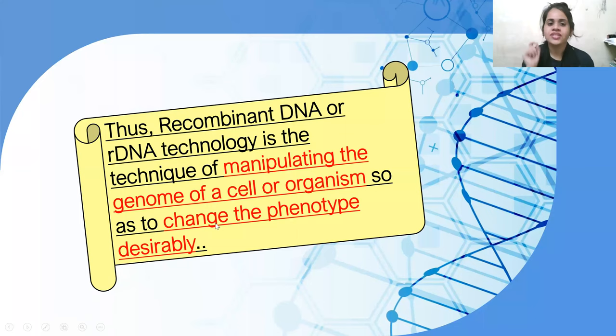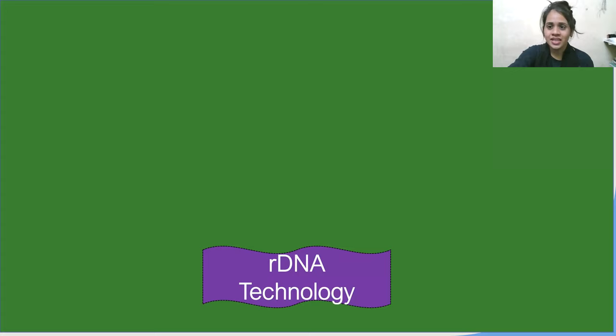Recombinant DNA technology, or rDNA technology, is a technique of manipulating the genome of a cell or organism so as to change the phenotype desirably. We say 'desirably' because we are using the genome of interest that we want — we can introduce or create that gene — and that is why the phenotype is created desirably.